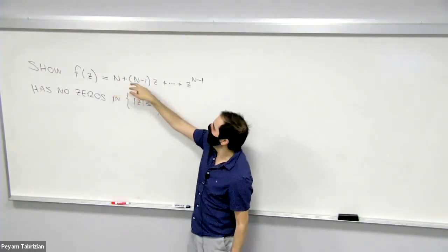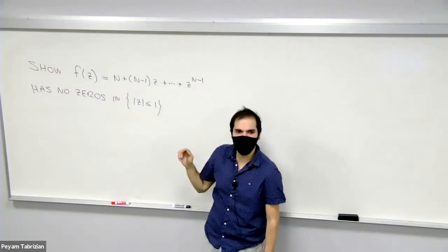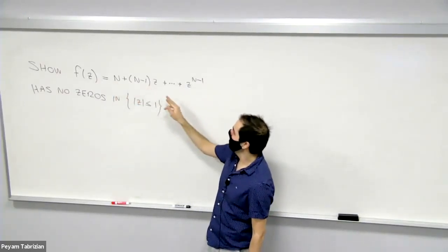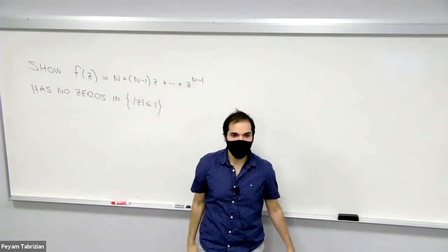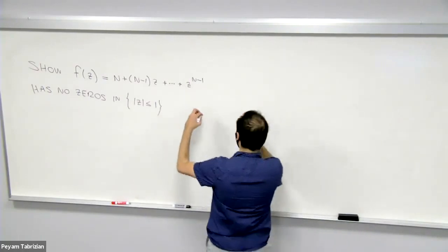f(z) = n + (n-1)z + ... + z^(n-1). So the coefficients decrease, but the powers increase. And show that this polynomial has no root in the unit disc.